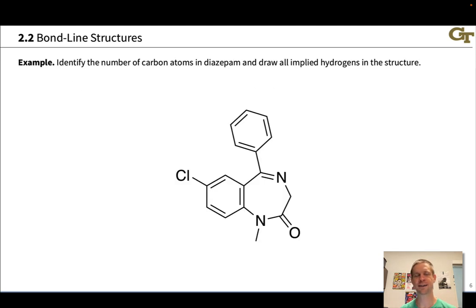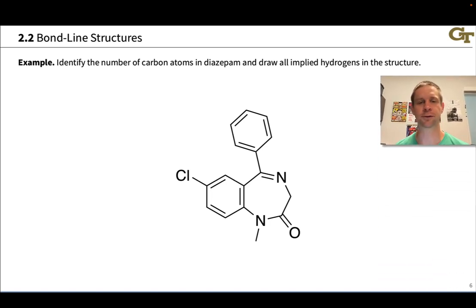Let's practice drawing in implied hydrogens and recognizing implied carbons in the structure of diazepam, which you may know better as the drug valium. All right, let's start with the carbons. And here again, I think it helps to number, just to make sure that we account for all the carbons rather systematically. There's a carbon at every confluence of bonds, everywhere where we see the structure kind of bend or two bonds come together, there's a carbon there without a letter.